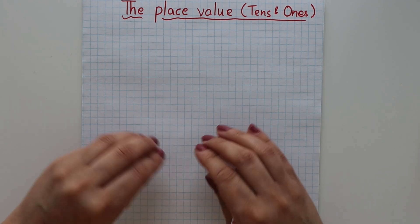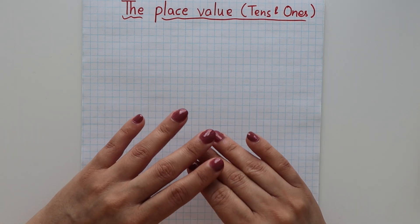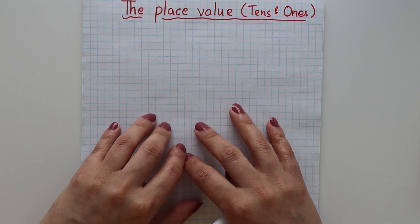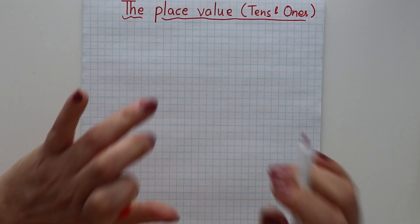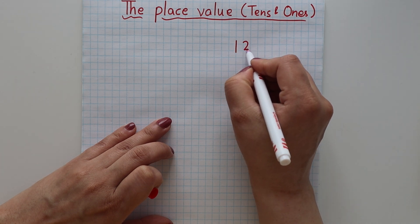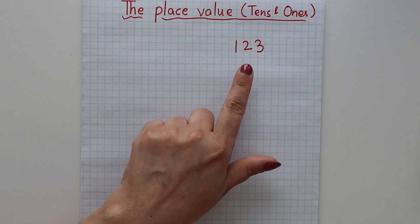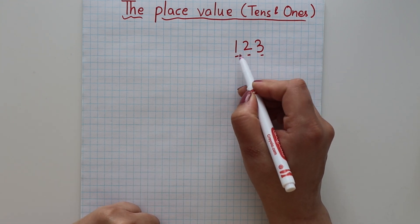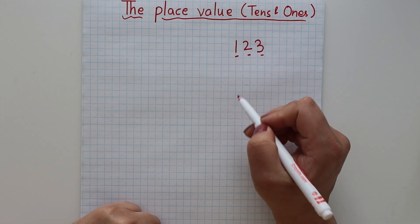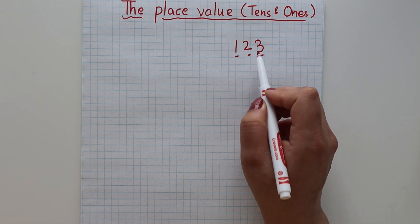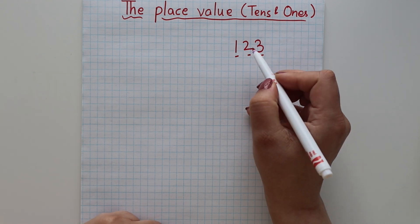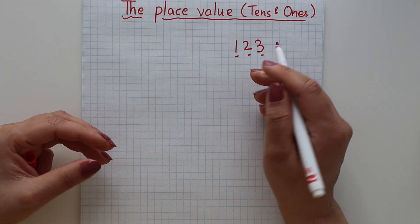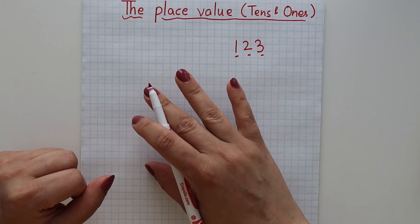I will try to explain this in basic terms so that it will be easy to understand. So what does place value mean? Like if there is any number — let's say we have 123 — this number has 3 digits: 3, 2, and 1. The value of each individual digit in a number is what we call its place value.